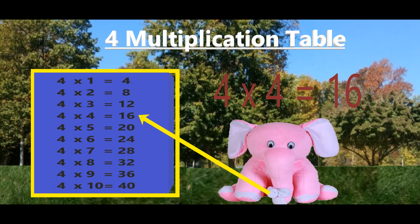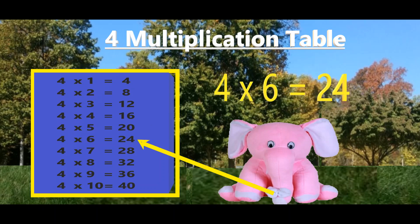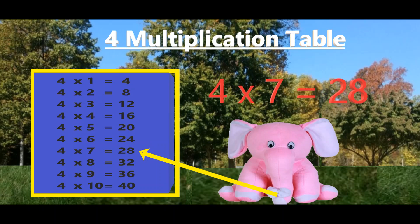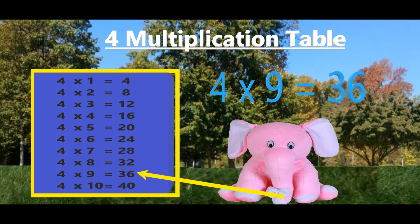4 times 4 is 16. 4 times 5 is 20. 4 times 6 is 24. 4 times 7 is 28. 4 times 8 is 32. 4 times 9 is 36.